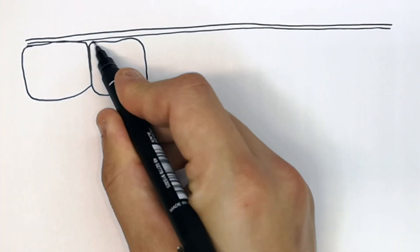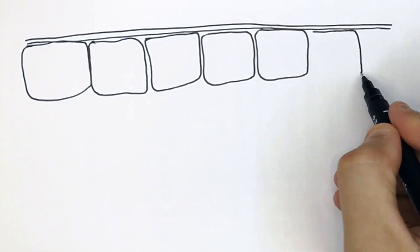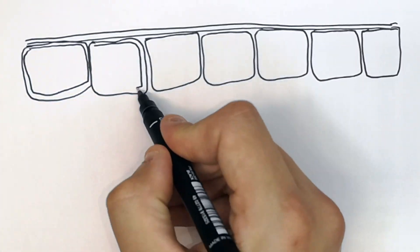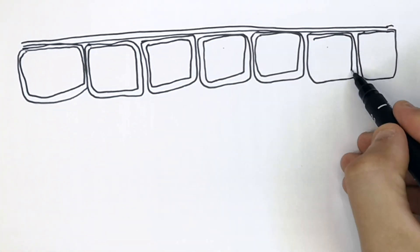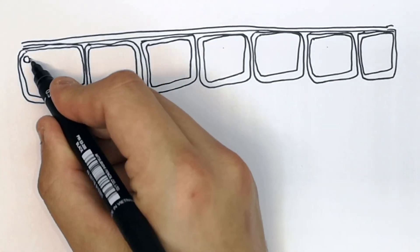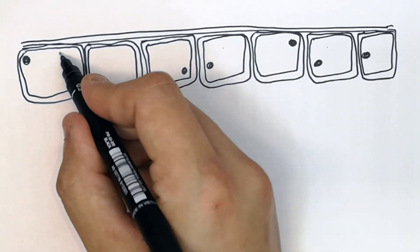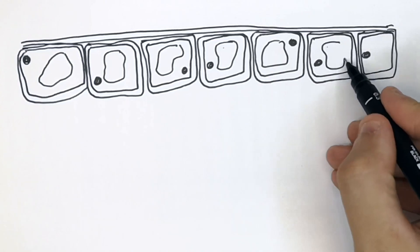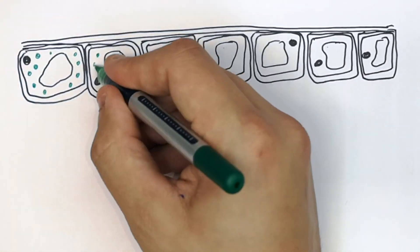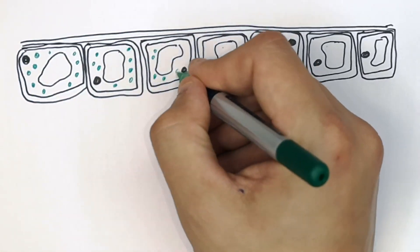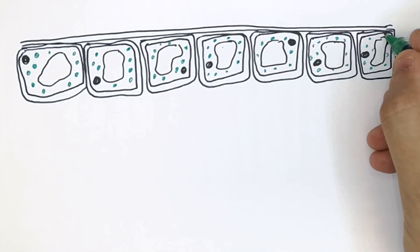I'm now drawing the palisade cells of the palisade mesophyll layer. The palisade cells have got cell walls because they are plant cells. They've also got nuclei because they are eukaryotes, and vacuoles because they are plant cells. They've got many chloroplasts to absorb as much light as possible for photosynthesis.